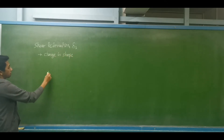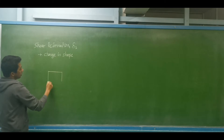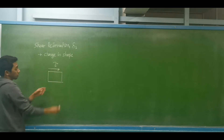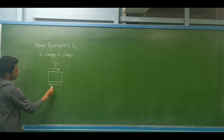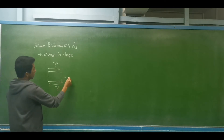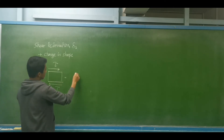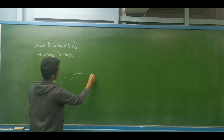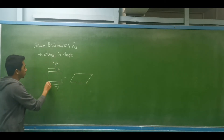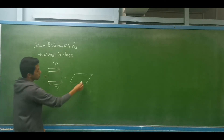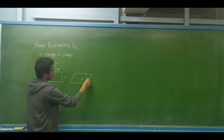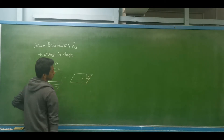For example, we have a sample or a material that is carrying a shearing stress. The shearing stress, denoted as tau, acts in both directions for equilibrium, and this will result in the change in shape of the material. If we consider the thickness, there will be an angle here in terms of gamma.